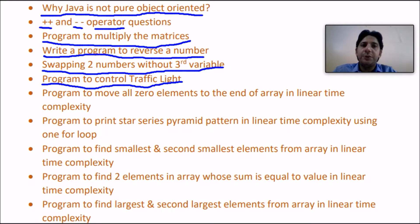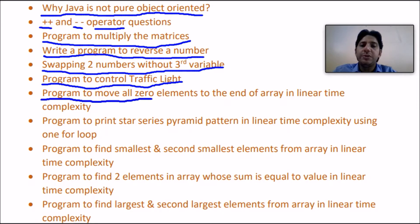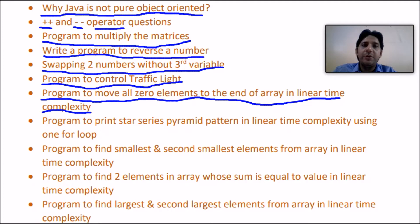Now moving toward tough questions — these are the pet questions of technical companies. They may ask: write a program to move all zero elements to the end of an array in linear time complexity. Companies are very much interested in time complexity because making a program is easy, but making it in limited time complexity is a tough job. They will give you an array containing zeros and you must shift all zeros to the end.